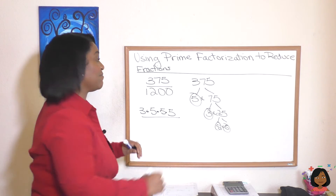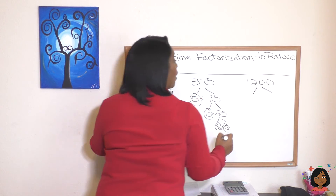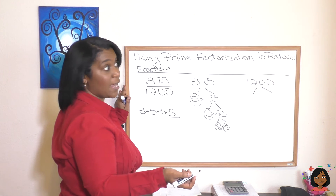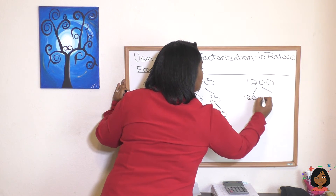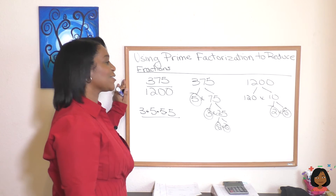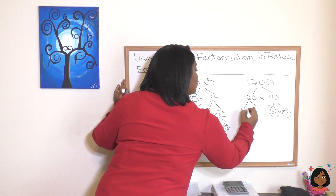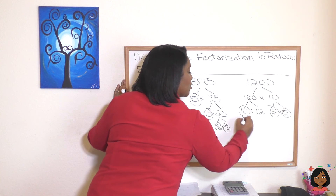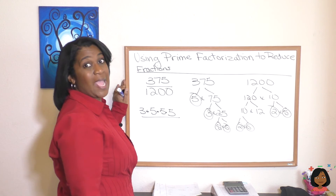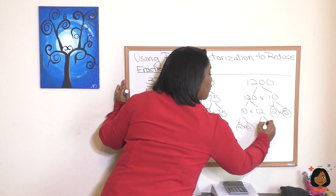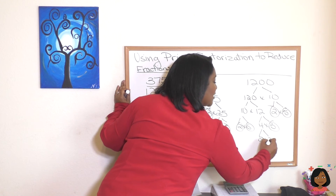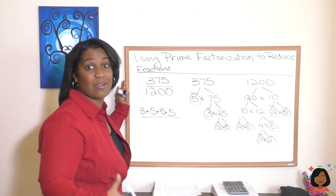Now let's do 1,200 over here. We could do 120 times 10. We know that 10 breaks down to 2 and 5, so I'm done there. Definitely not done with 120, so let's do 10 times 12. We know that 10 breaks down to 2 and 5. Now let's do 12 — we know 12 is 4 and 3, so I can circle the 3. But 4 breaks down to 2 and 2. It doesn't really matter how you get there, as long as you keep breaking numbers down until they're prime.